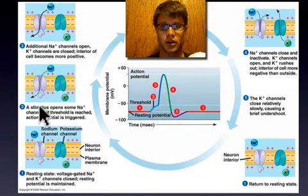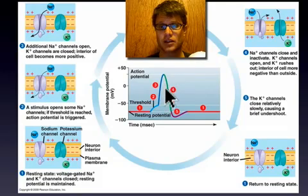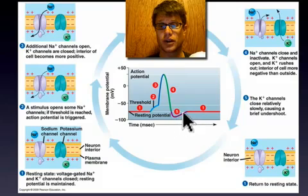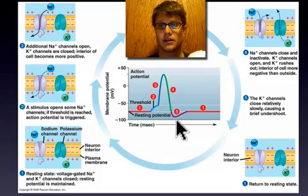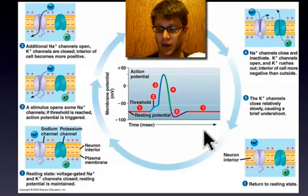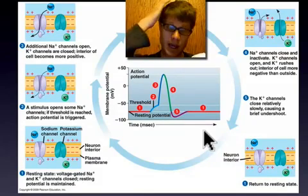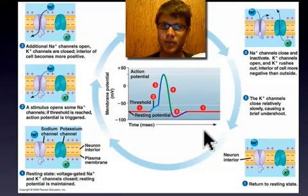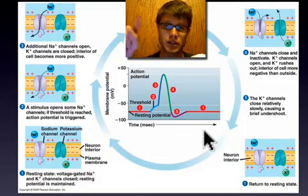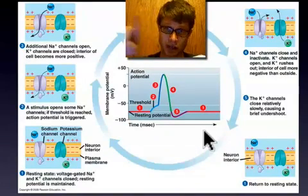If we do hit that threshold, we see this big swing as all the sodium gates open up. Eventually those sodium gates close and we open up the potassium gates — potassium starts flowing out of the cell, swinging back to the negative, and then we undershoot. That undershoot is important because it keeps the action potential moving in one direction — it can't go back on itself. The difference between a gentle tap and a hard hit is the number of action potentials: a small signal is a few action potentials per millisecond, but a big hit produces a large burst very quickly.